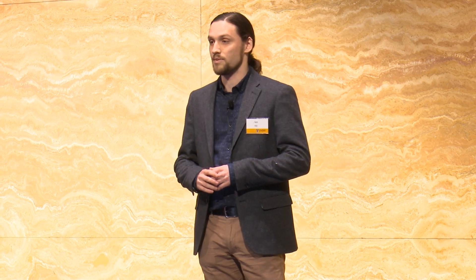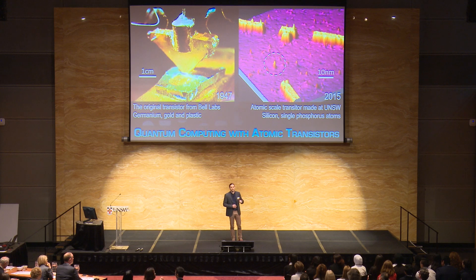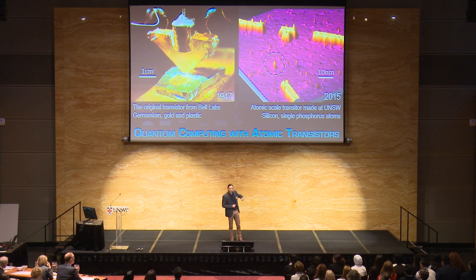My research looks ahead to the extreme limit of miniaturization, down to the scale of individual atoms. The flow of electric current through this atomic scale transistor depends on the configuration of one single electron orbiting just one single atom that I have put there in the circle to contain it. We're now encoding information on objects so small that they are inherently quantum mechanical, and that is a game-changer.